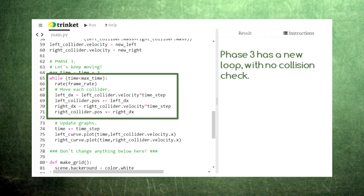Finally, the code enters phase three, where the colliders move away with their new velocities. Notice that this animation loop uses the exact same calculations as the first. Except this time, we don't need to check for a collision.